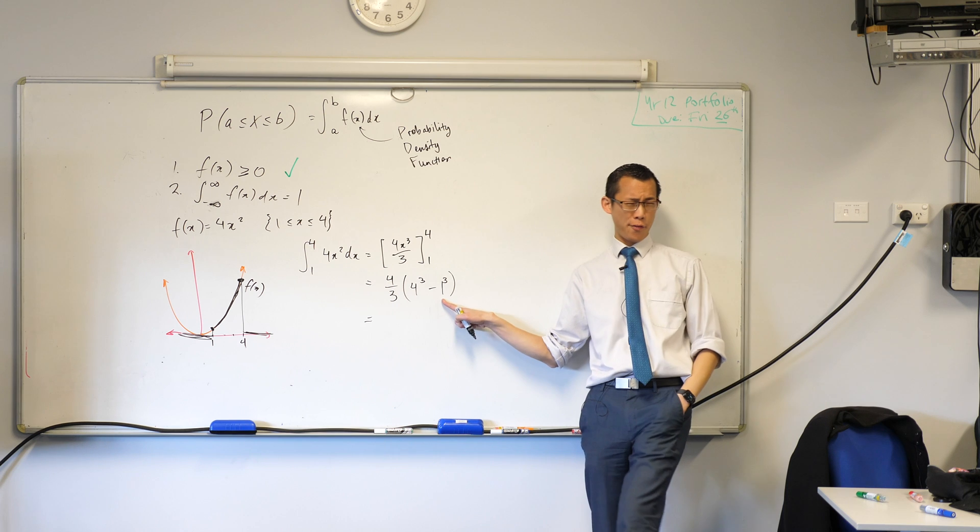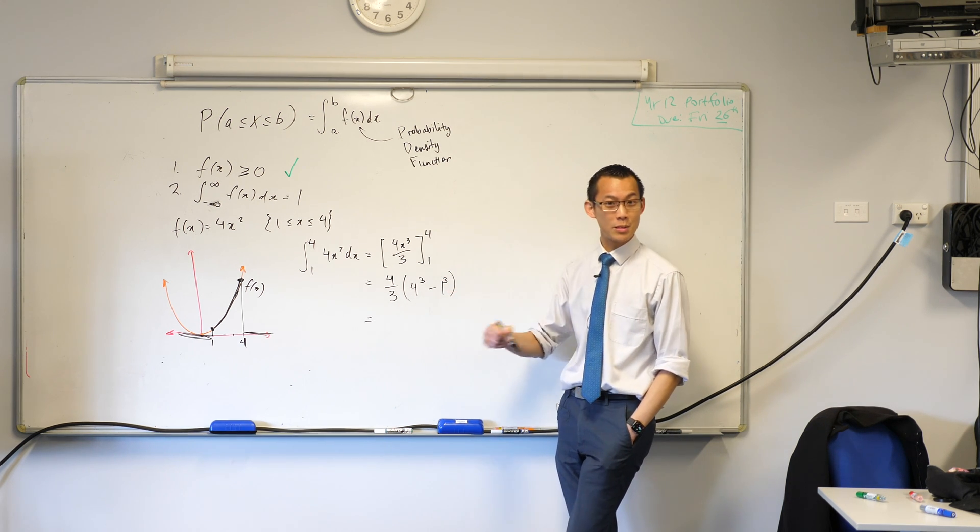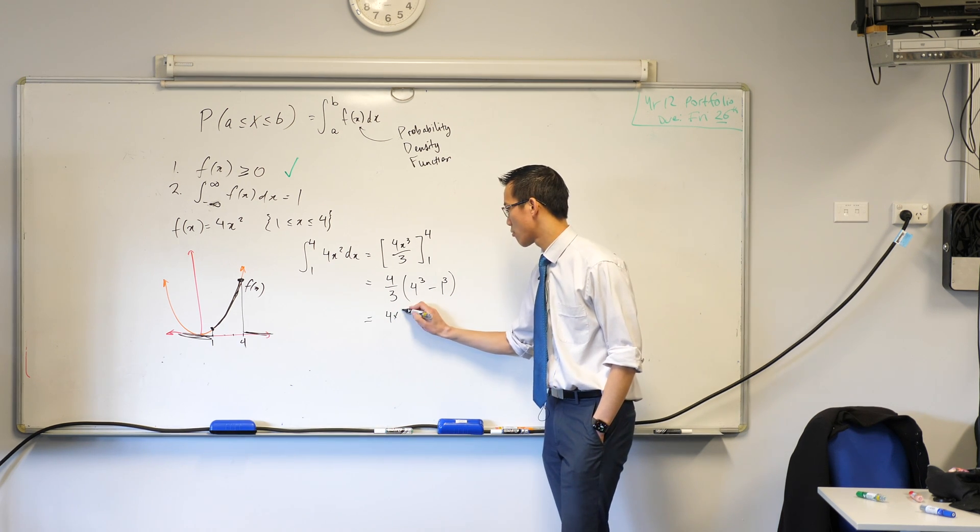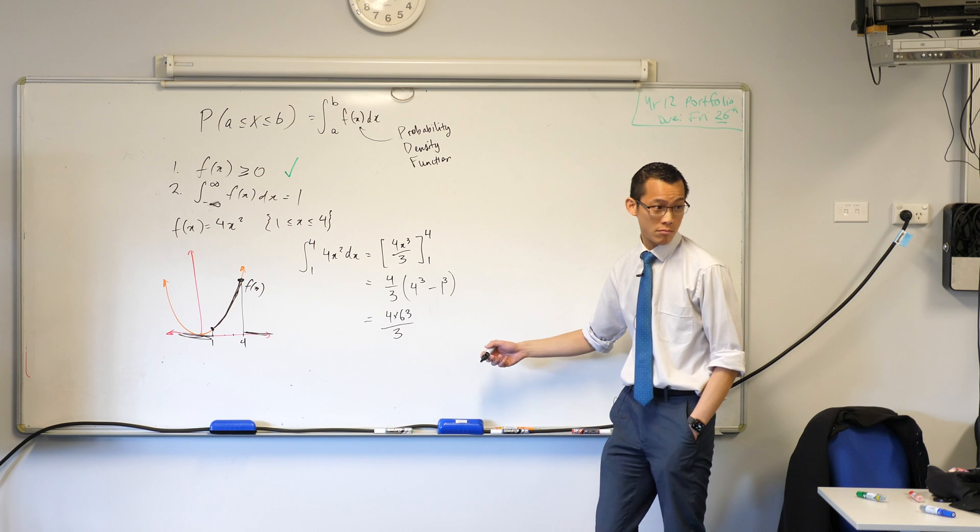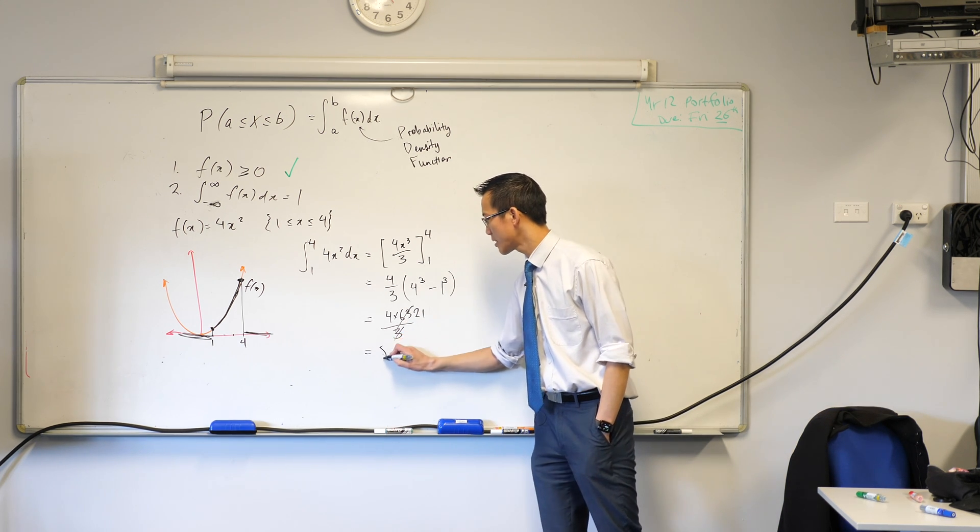4 cubed is 64. 1 cubed is 1. So 64 take away 1 is 63. Yeah? That's okay? Common factor of 3 leaves me with 21 up the top. So that's 84.